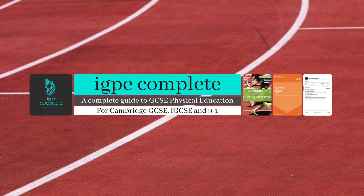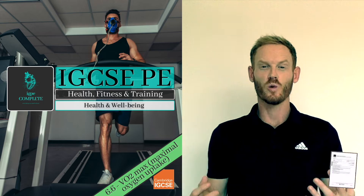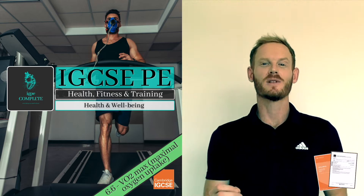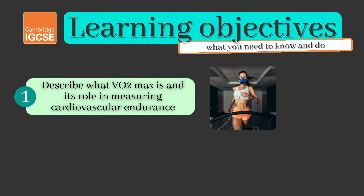Hello and welcome to another complete Cambridge IGCSE PE lesson. The final topic in chapter 6: VO2 max. As always, we'll cover absolutely everything you need to know for your exam. Today you need to be able to describe what VO2 max is and its role in measuring cardiovascular endurance.